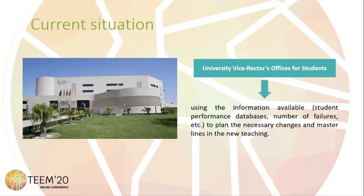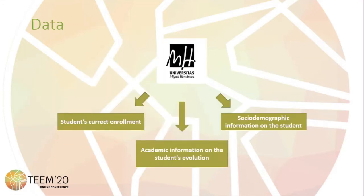At the time, university vice-rectors offices for students are using the information available, such as the students' performance database and number of failures, to plan the necessary changes and align new teaching. The vice-rectors office for students provides the corporate database that collects information regarding the student's current enrollment, academic information on the student's evolution, and socio-demographic information on the student.